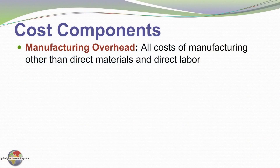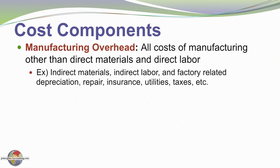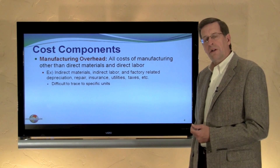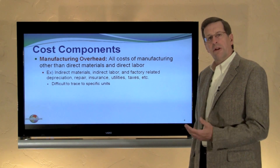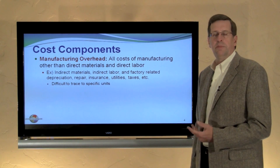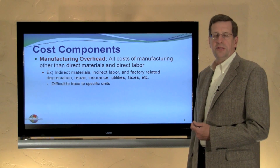The third key manufacturing cost component is manufacturing overhead. Examples include indirect materials and indirect labor, as I just referred to, as well as other factory costs such as factory depreciation, insurance, utilities, taxes — things of this nature that relate to the actual manufacturing facility. These costs are difficult to trace to specific products but are clearly an important cost that must be incurred to produce the final product.